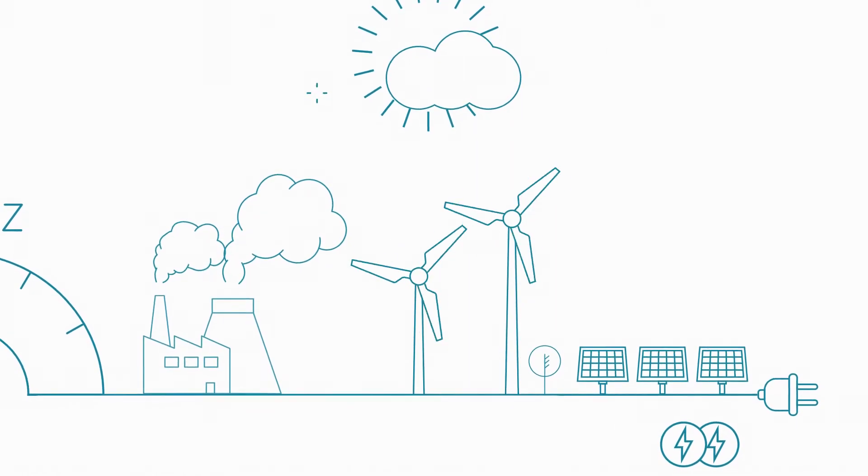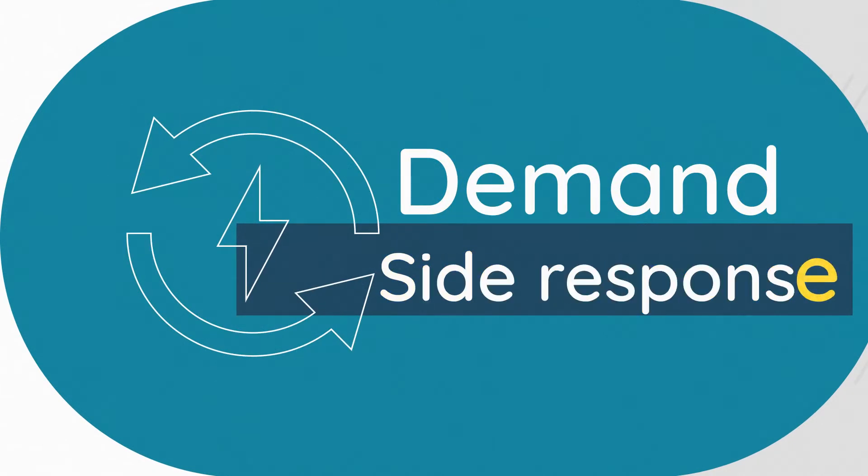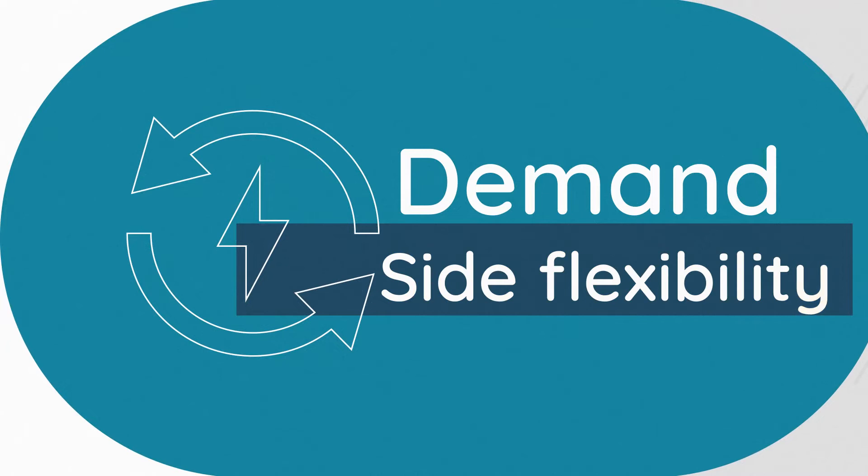This flexibility can be provided for consumers through something called demand response, also known as demand-side response or demand-side flexibility. Well, yes, we do use different terms, but the concept is really the same. It's consumers using the flexibility that is in their assets to help balance the grid.